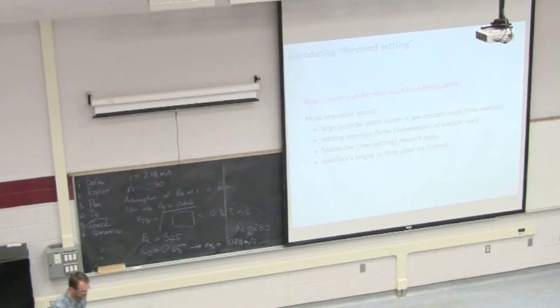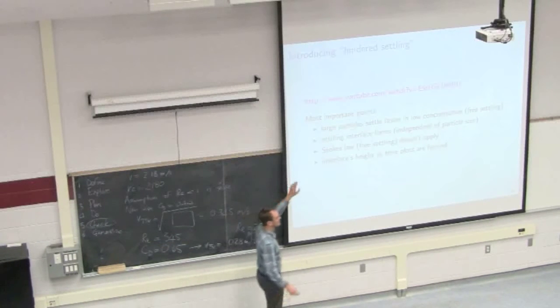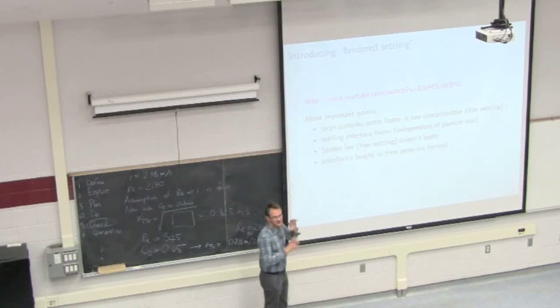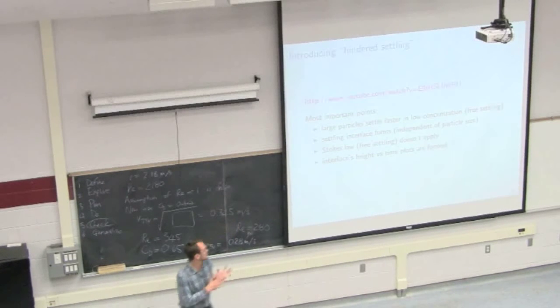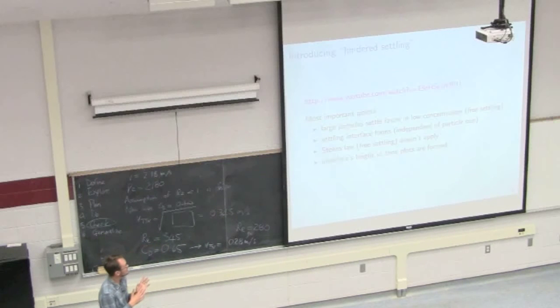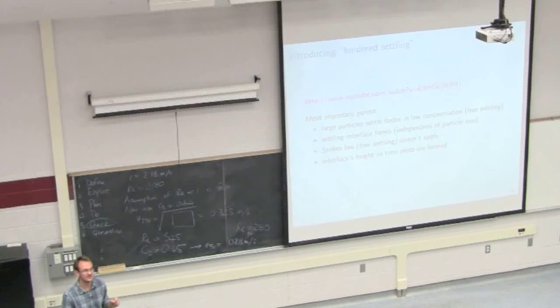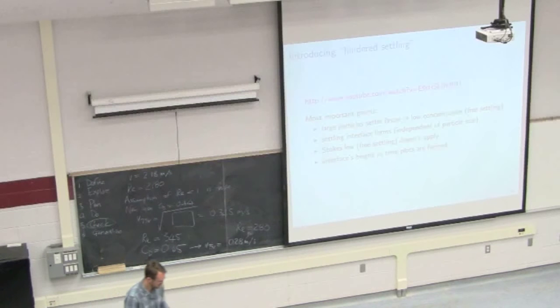I do also want to consider now the case of where we're going to break our assumptions. We've really been focusing on a single particle settling. But what happens if there's other particles around it? A very high concentration of particles. Well then, these laws that we've been looking at break down. There's problems that start to happen. And one way that we can look at this is by what's called the concept of hindered settling. So let me have someone else explain hindered settling for you because they've got some nice animations which I don't have.